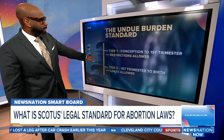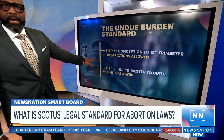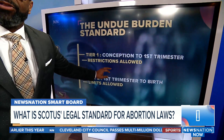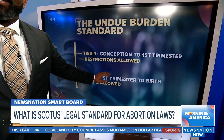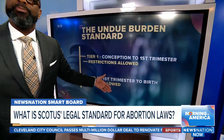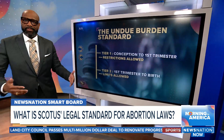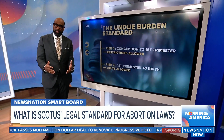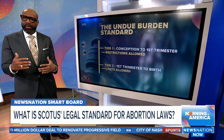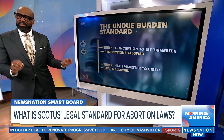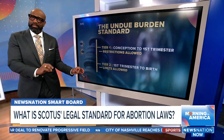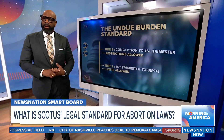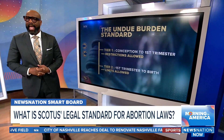When we talk about Casey, in 1992, they did away with the trimester framework and instead created an undue burden standard. States could now regulate abortion as well as limit access after the first trimester, as long as the laws didn't impose a substantial obstacle to prevent a woman from getting access.